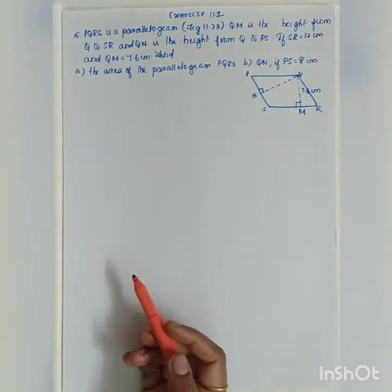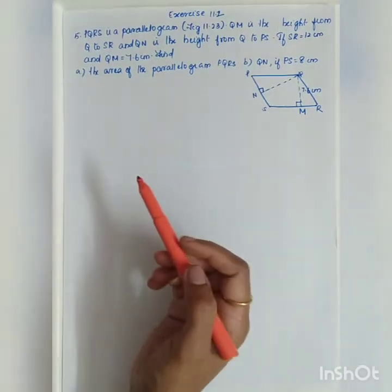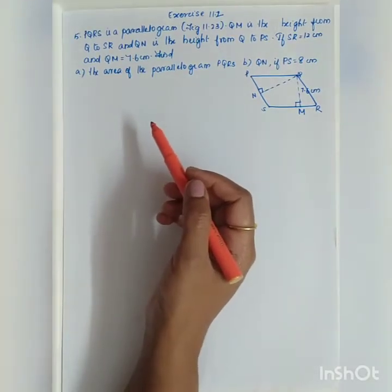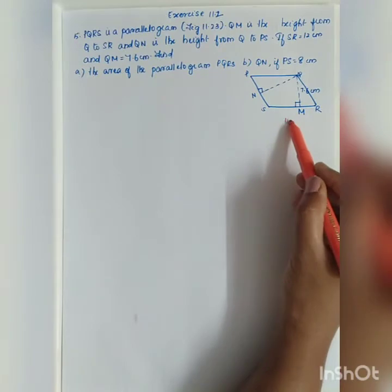The next question is Exercise 11.2, Question number 5. PQRS is a parallelogram as shown in figure 11.23.